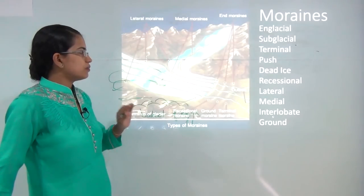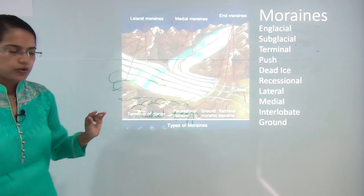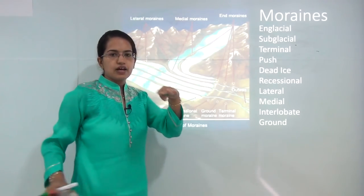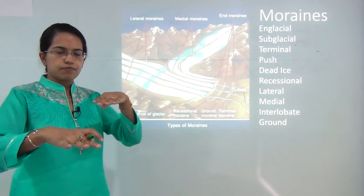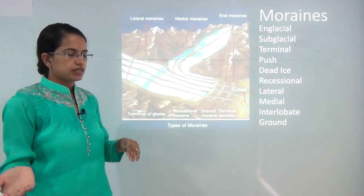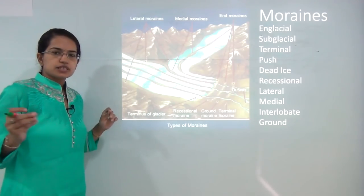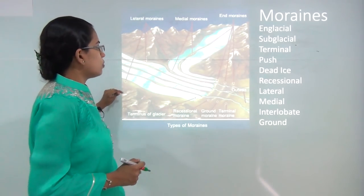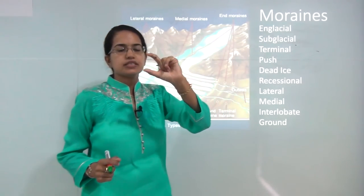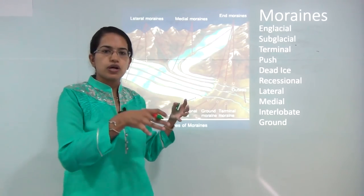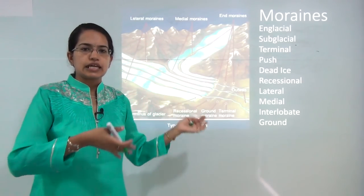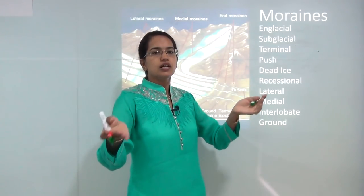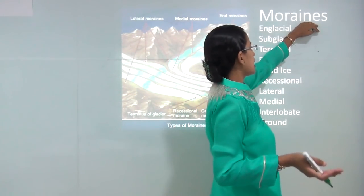Under depositional landforms the most important is moraines. As the glacier moves along some surface, there is abrasion or removal of sediments in the form of fine particles, pebbles, cobbles, or boulders — those are known as moraines. Moraines are sediments that move along with the glacier, similar to how a river takes sediments from the nearby area. When the glacier moves along, the sediments it takes are known as moraines.